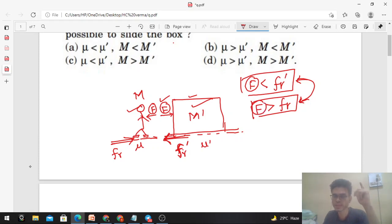So you see, the first equation can be written as F less than F_r', and the second equation as F greater than F_r. From here, we get F_r less than F_r'.